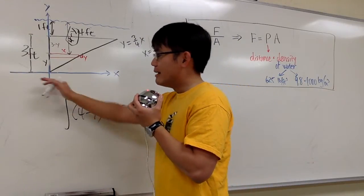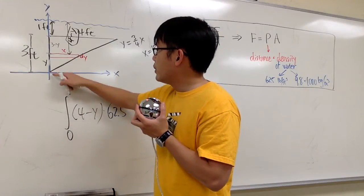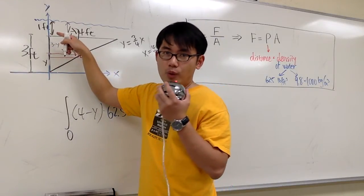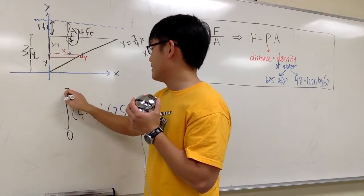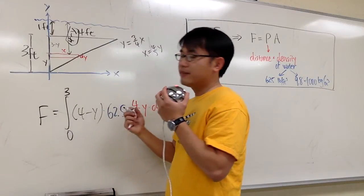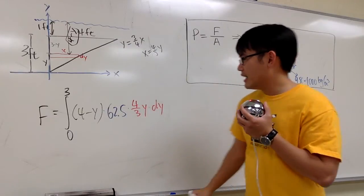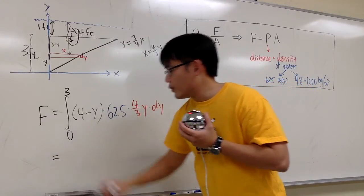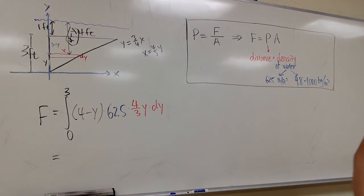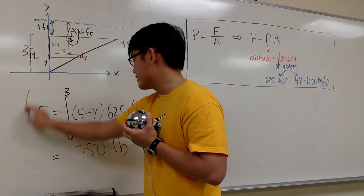We are going to integrate this, and based on the labeling we start at y equals 0 and go up to y equals 3. This integral will give us the hydrostatic force acting on this triangular plate. If you work this out, the answer will be 750 pounds.